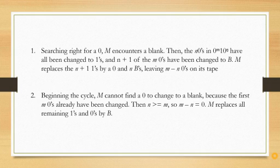And n plus 1 of the m zeros have been changed to blank. Machine replaces the n plus 1 ones by a 0 and n blanks, leaving m minus n zeros on its tape.